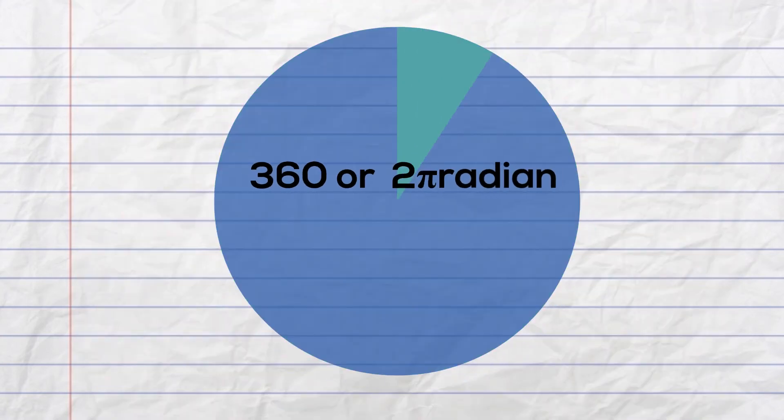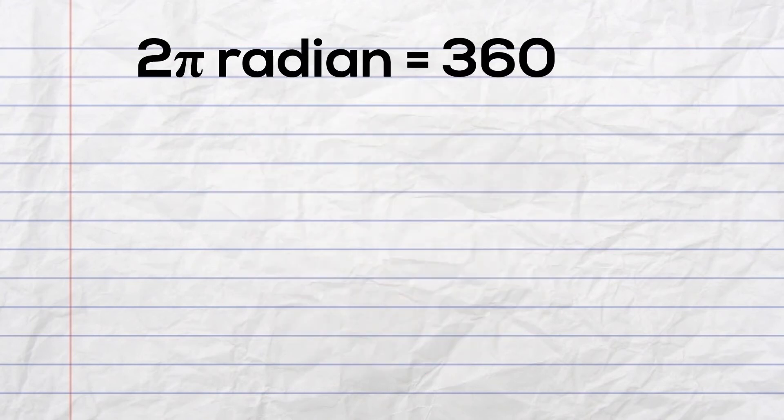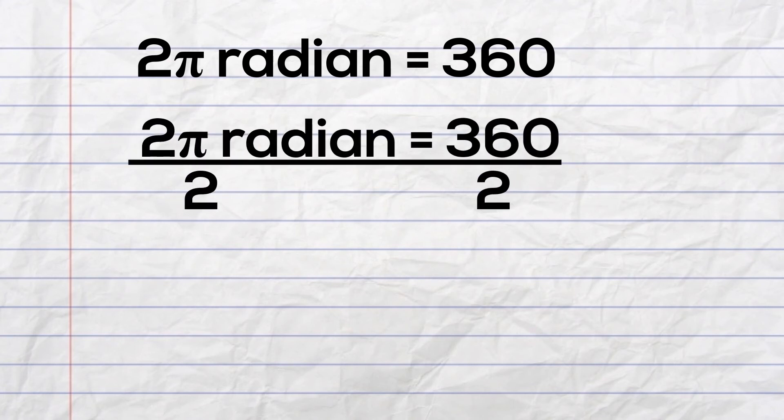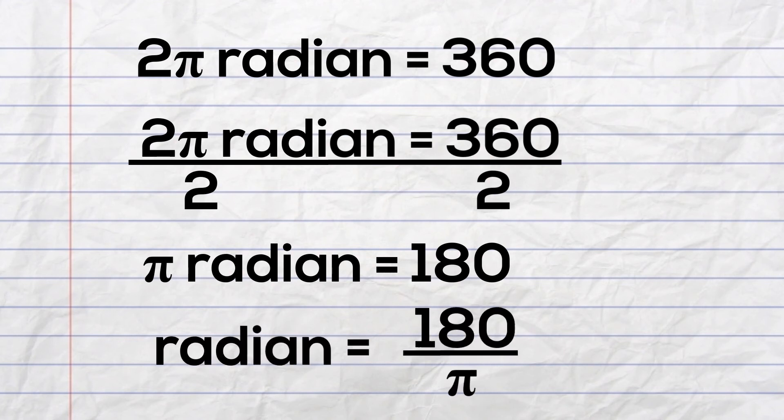So one full rotation equals 360 degrees, or 2π times a radian. So we can say 2π radian equals 360 degrees. If we take just a half rotation, we can divide both sides by 2. So 2π radian divided by 2 equals 360 degrees divided by 2. And that tells us that π times radian equals 180 degrees. Or if we isolate the radian, a radian equals 180 degrees divided by π.